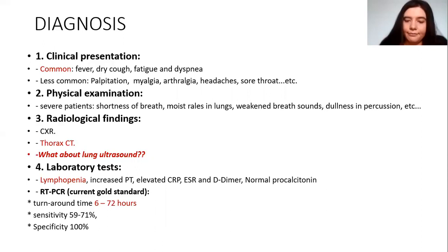Then the thoracic CT scan. We are also going to discuss lung ultrasound and its use in these cases. For laboratory diagnosis, lymphopenia is an important sign, as well as elevated CRP and normal procalcitonin levels. The gold standard is PCR, with a turnaround time of 6 to 72 hours, sensitivity around 15 to 71%, and specificity around 100%.